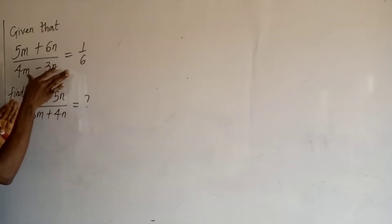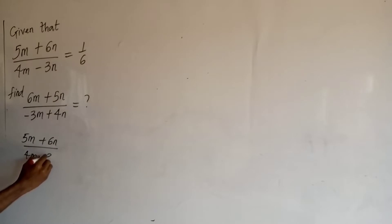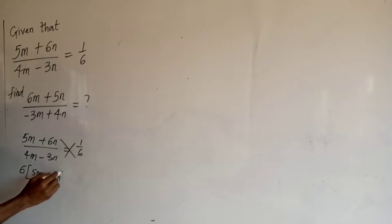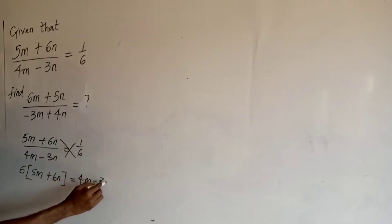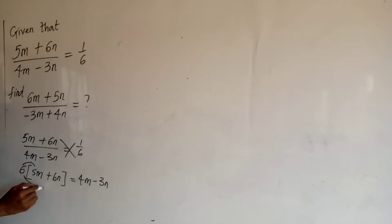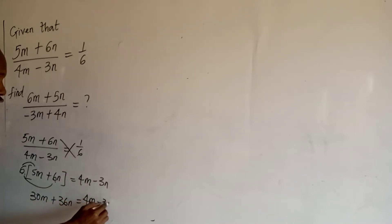So how do I get the relationship from this equation? Let's get started. So (5m + 6n) upon (4m − 3n) is equal to 1 over 6. I will cross-multiply. So I have 6 into (5m + 6n) equal to 1 into (4m − 3n). If I distribute with 6, I will have 6 times 5m giving me 30m, plus 6 times 6n giving me 36n, is equal to 4m minus 3n.